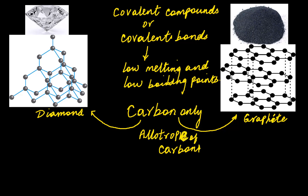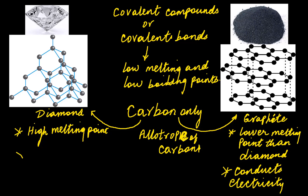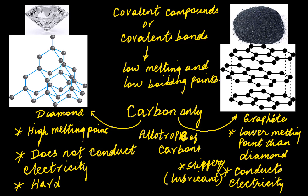An allotrope consists of two different forms of the same element, and they show different physical properties. For example, diamond has a very high melting point compared to graphite. Graphite also has a high melting point, but lower than diamond. Graphite conducts electricity but diamond cannot conduct electricity. Diamond is very hard whereas graphite is slippery, and because it's slippery it is a good solid lubricant.